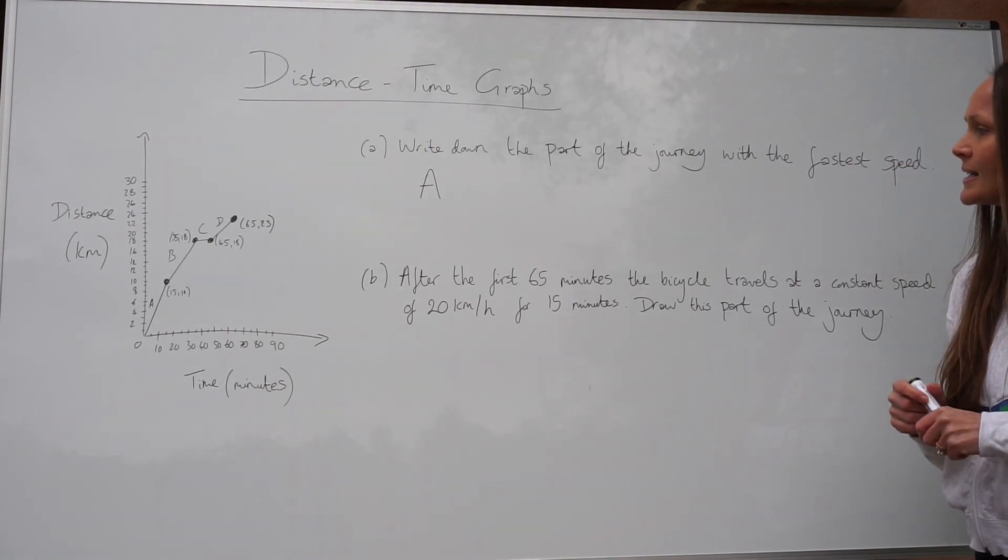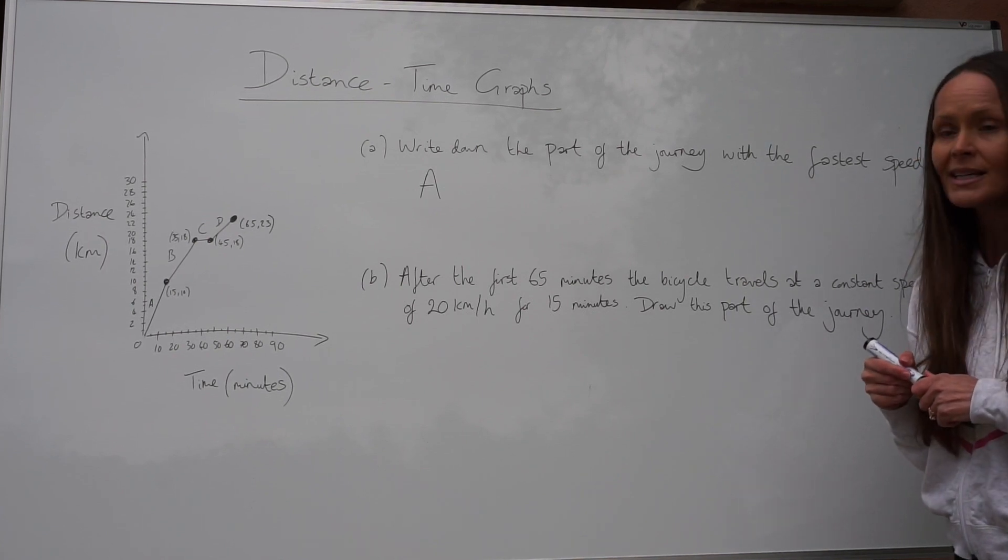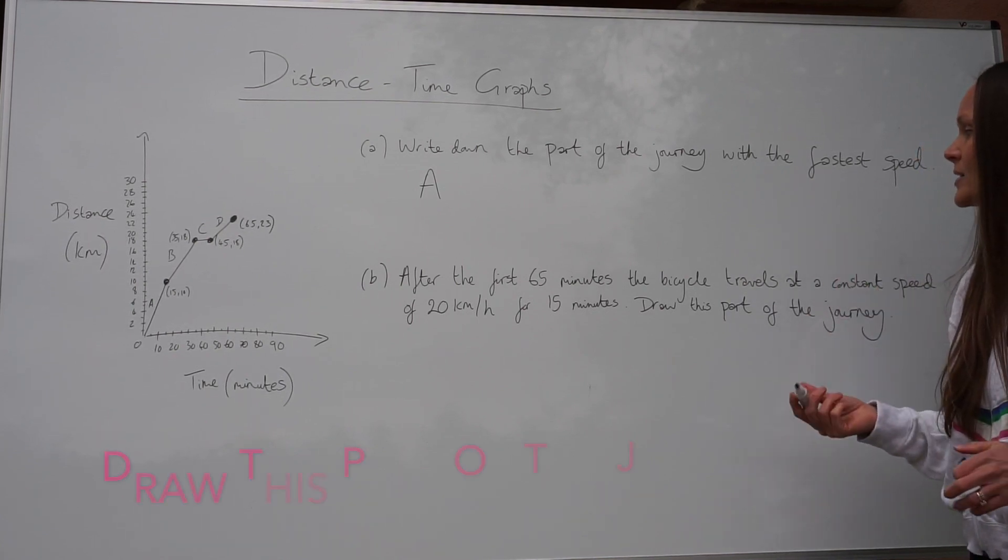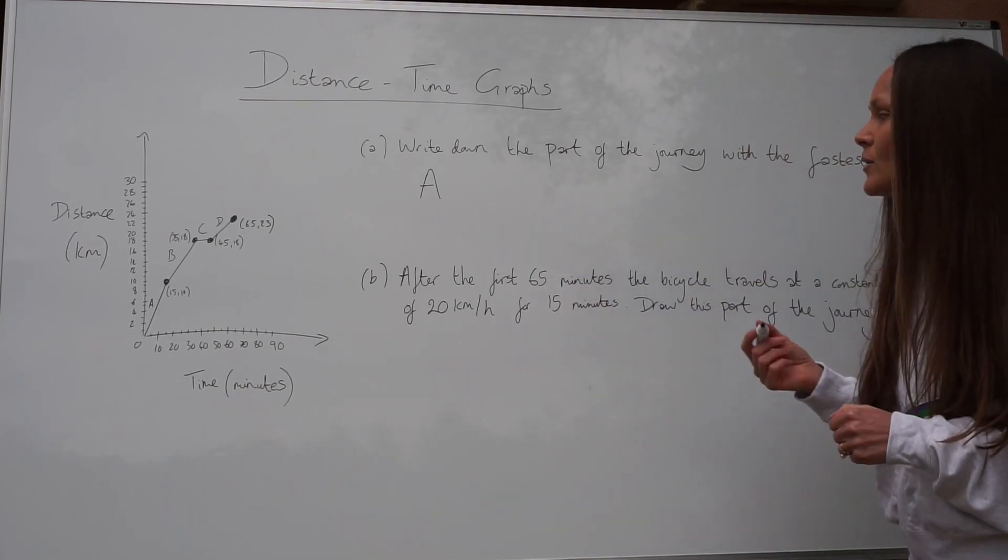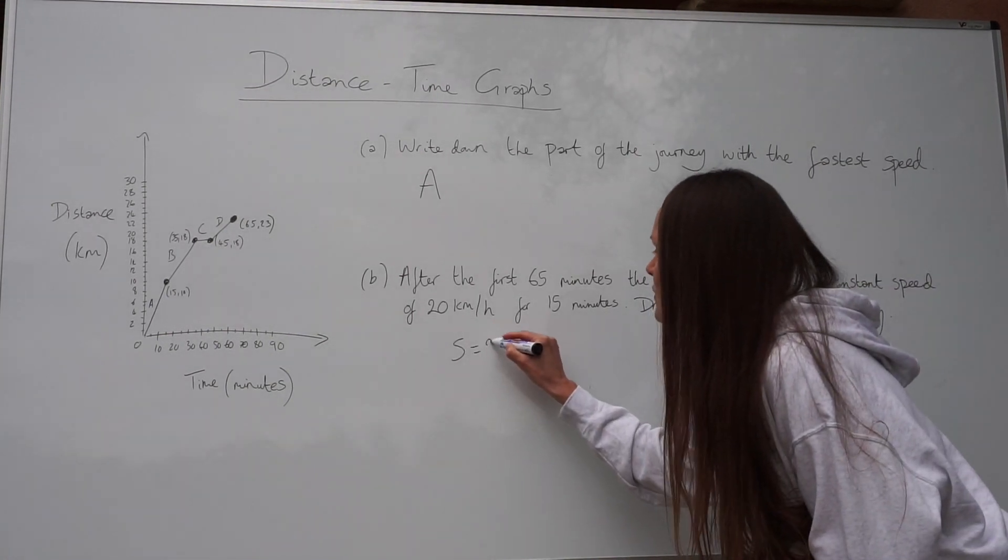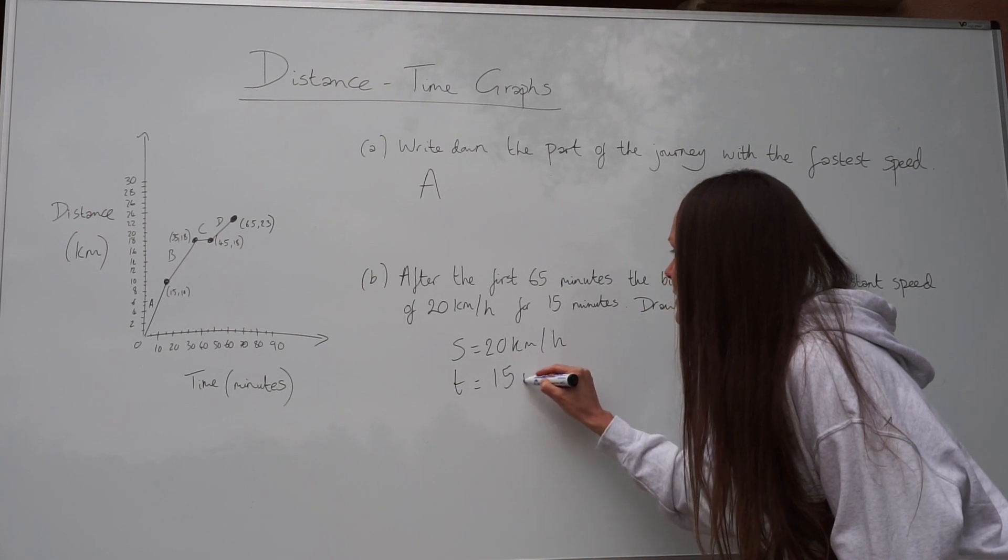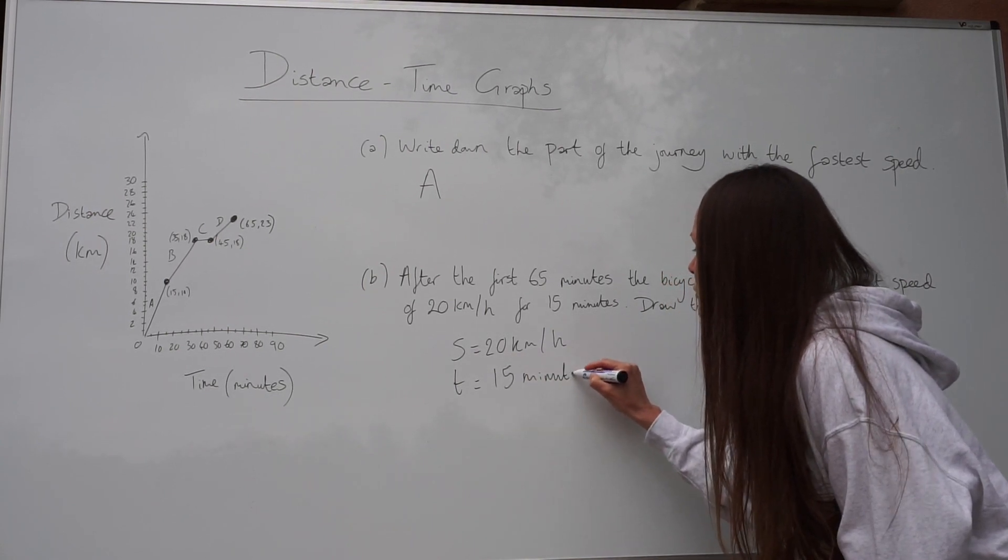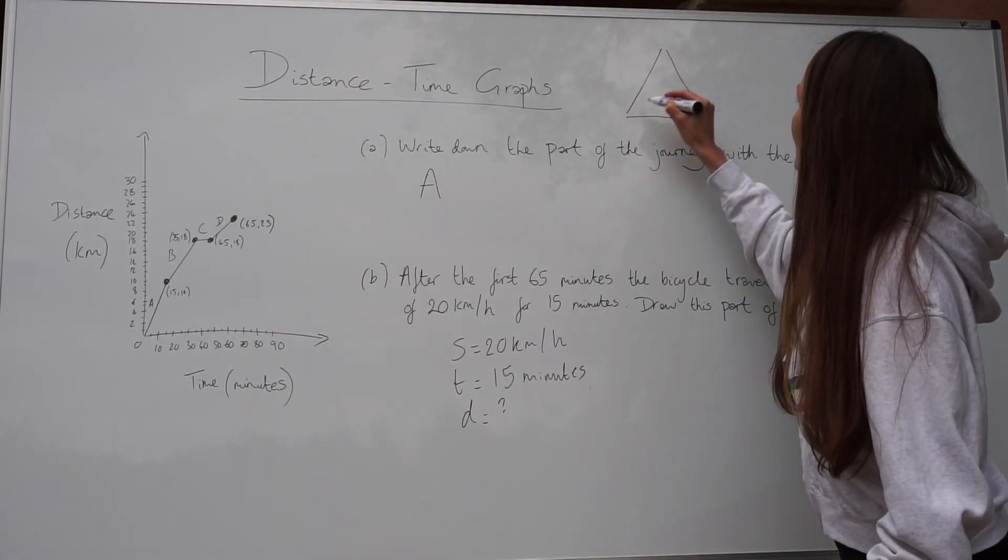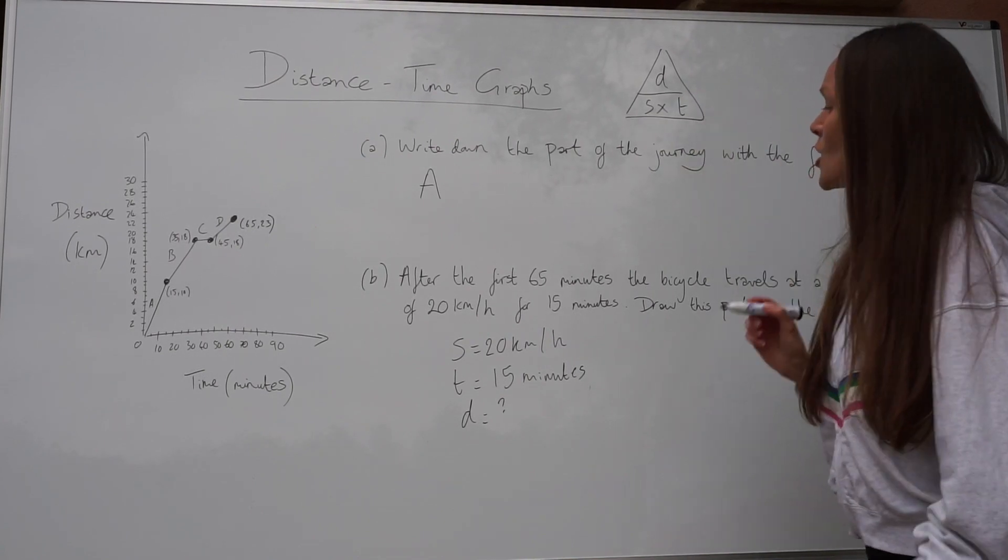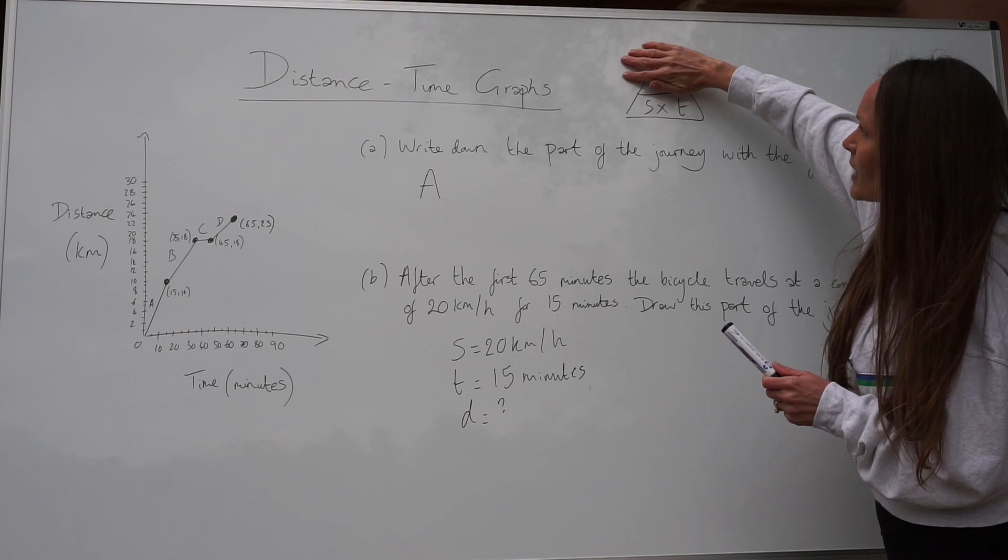So for part B, it says, after the first 65 minutes, the bicycle travels at a constant speed of 20 kilometers an hour for 15 minutes. Draw this part of the journey. So we have to complete the distance time graph ourselves. So speed is 20 kilometers an hour. And we also know the time is 15 minutes. So what you need to do is work out the distance. Now remember that triangle I used earlier, connecting distance, speed and time. To work out the distance, you need to multiply the speed by the time.